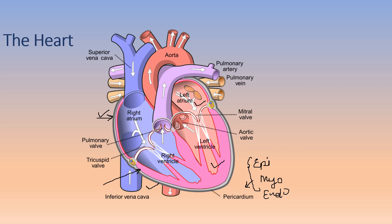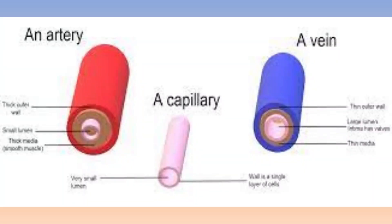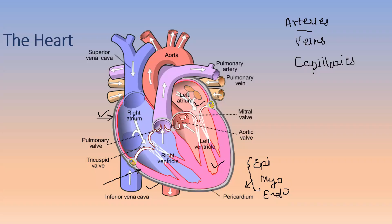There are three types of blood vessels: arteries, veins, and capillaries. Arteries carry oxygenated blood towards the body. They have a narrow lumen and a thicker wall because the blood pressure within them is very high, as the blood has to be transported all over the body.